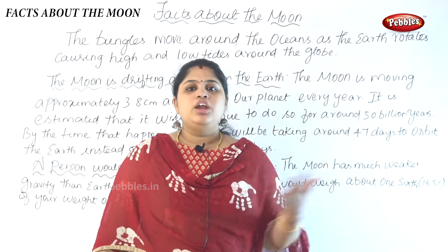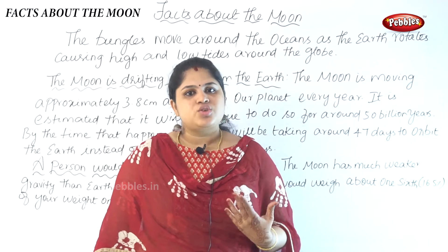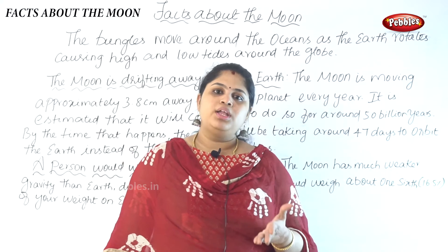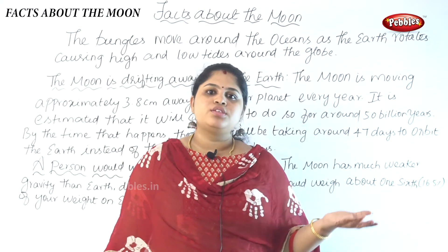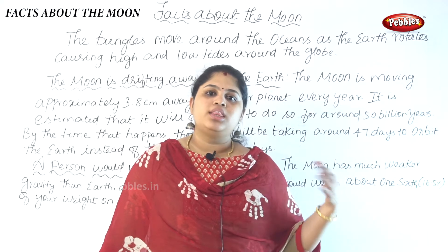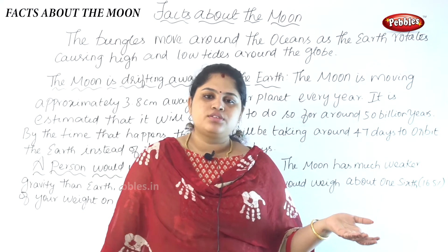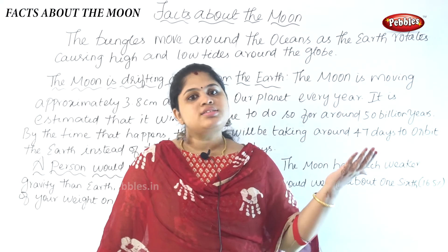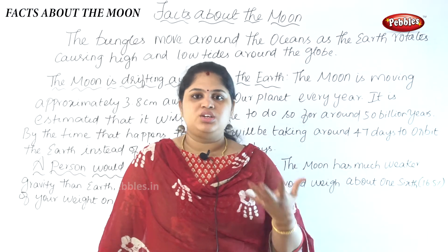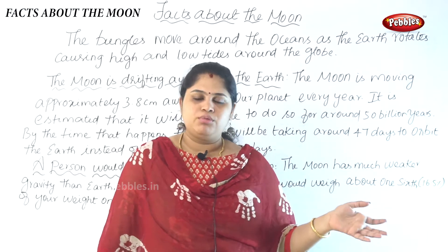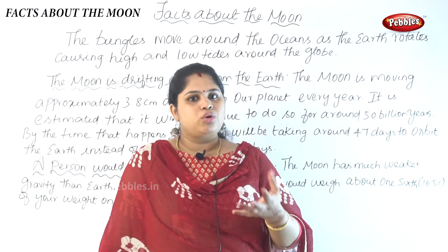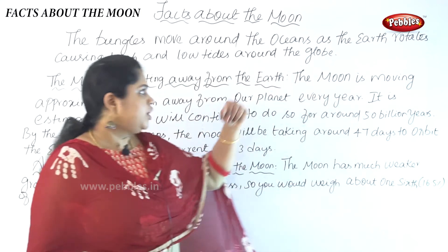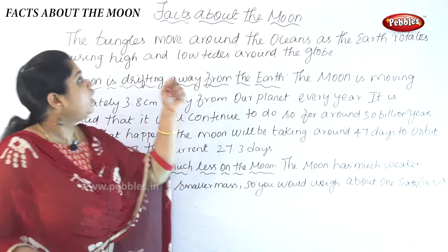There are two bulges on the earth. One bulge faces the moon and the other faces away from the moon. I have told about those bulges, so I am continuing with that point.